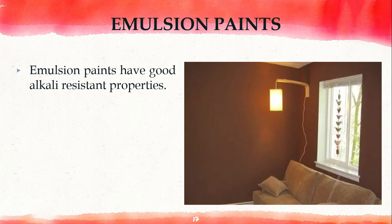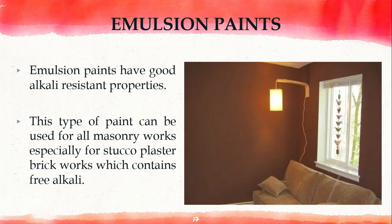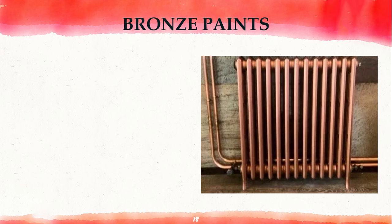Next are emulsion paints. Emulsion paints have good alkali-resistant properties, achieved by using binders like polyvinyl acetate, styrene, and alkali resin. They dry very quickly and can be washed with water, due to their film-forming constituent emulsified in water instead of solvent. This type of paint can be used for all masonry works, especially stucco plaster and brick works which contain free alkali.